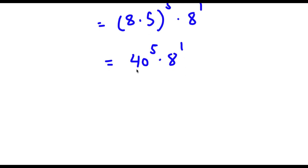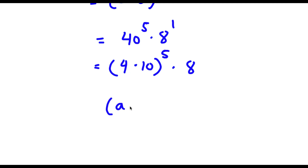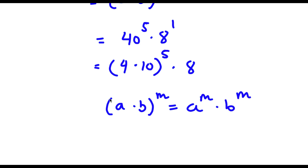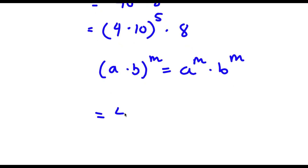Now 40 to the power of 5 — well, 40 is the same thing as 4 times 10. So now I have 4 times 10 to the power of 5 times 8. And now if I have something in the form a times b to the power of m, that's the same thing as a to the power of m times b to the power of m. So 4 times 10 to the power of 5 is going to equal 4 to the power of 5 times 10 to the power of 5.